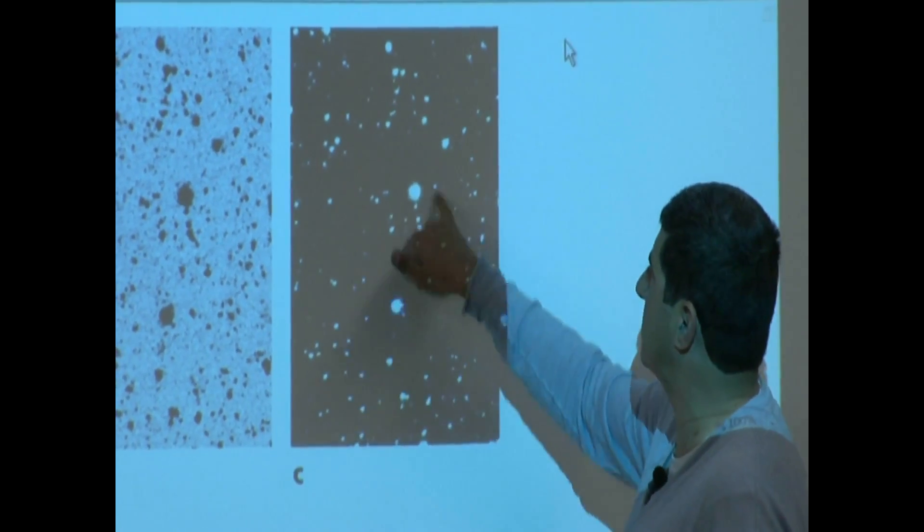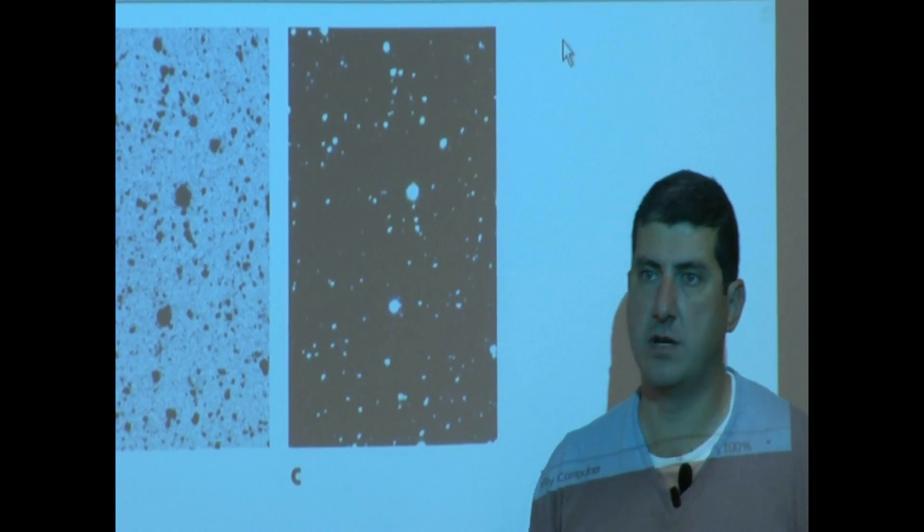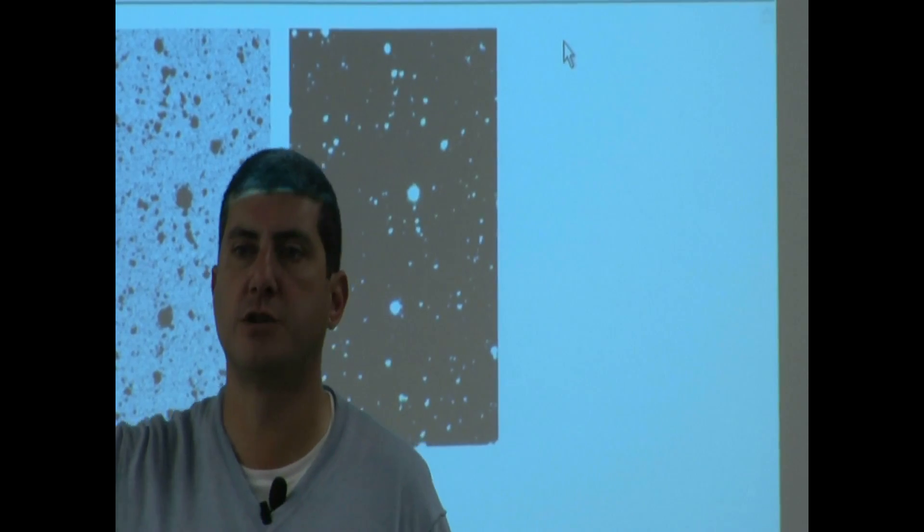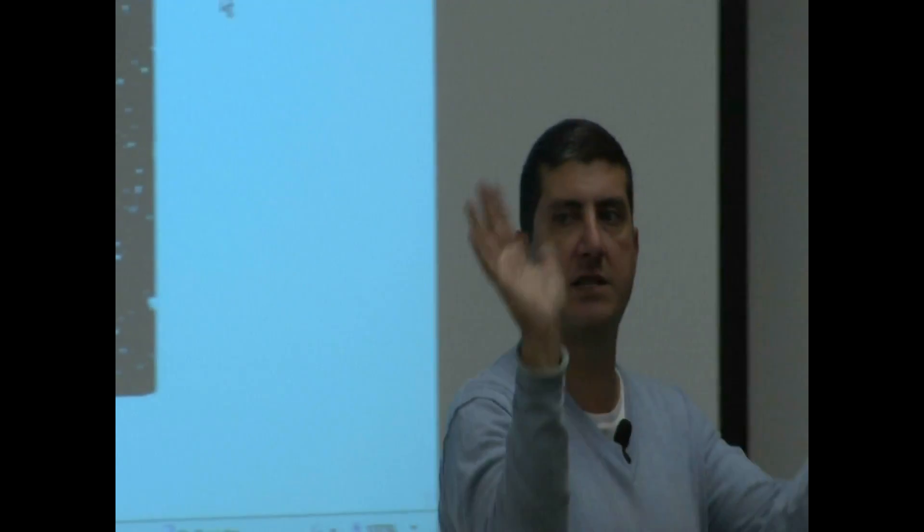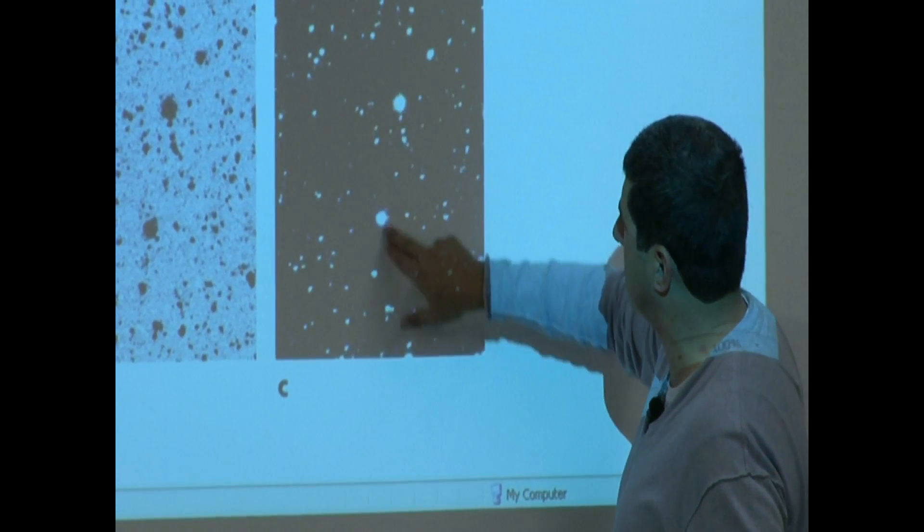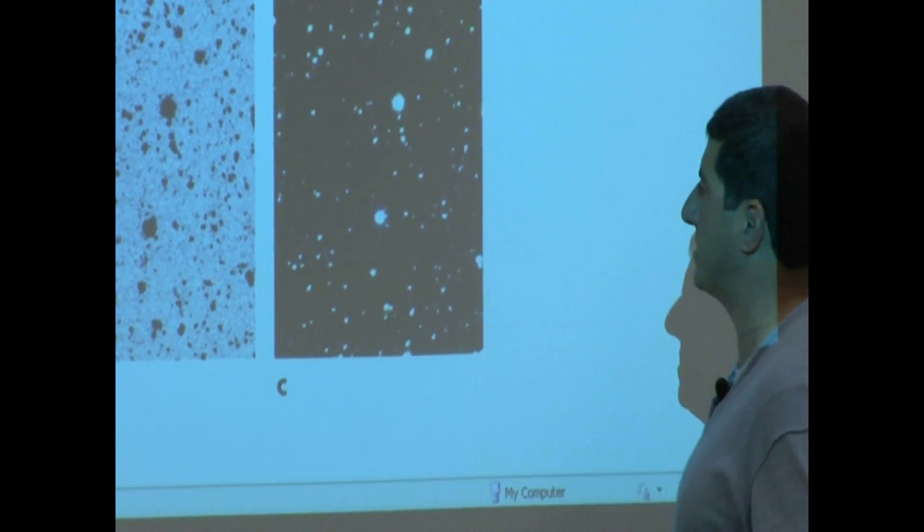And then what they do is they start adding color to it. What they do is they take pictures through different filters. They might put a green filter or a blue filter and then they take different pictures of the sky, then they combine them and that's how you get those beautiful pictures. And then you can have orange color, more white color, red color and stuff.